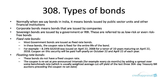In this chapter we will be discussing about types of bonds. Normally when we say bonds, it means bonds issued by public sector units and other financial institutions. Corporate bonds means bonds that are issued by companies. Sovereign bonds are those issued by government or RBI. So bonds are issued by a variety of entities — it can be companies, public sector units, or even state governments or central government.